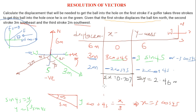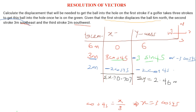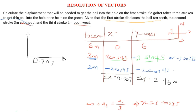To find the total displacement, the scatter diagram with all the original vectors has now been resolved into only x and y components. We have 0.707 meters in the positive x-direction and 2.46 meters in the positive y-direction. This resultant vector is the total displacement we need to find.